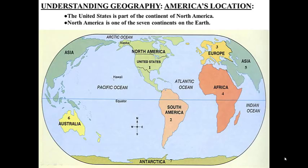Now we have to find America's location on the earth to continue understanding geography. The United States of America is part of North America, which is one of the seven continents on earth. Those seven continents you should know from previous grades. They are Asia, Australia, North America, South America, Antarctica, Europe, and Africa — seven continents. You can see them on the map with different colors and numbers. The United States is a country that is part of North America.